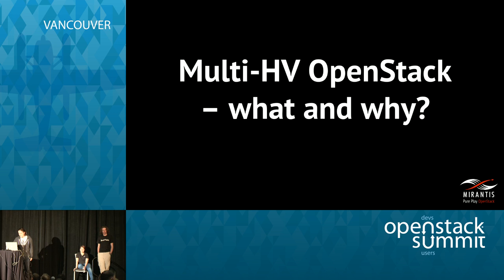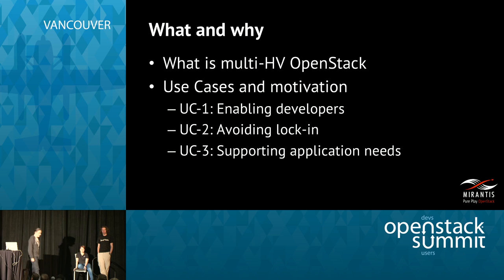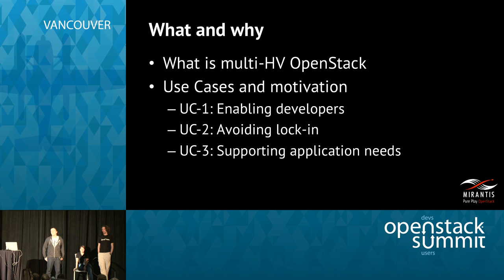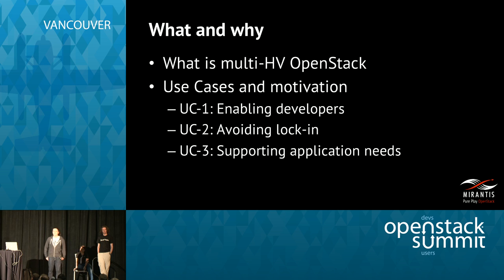So, multi-hypervisor OpenStack — what and why? The idea is pretty obvious to anyone who has been using OpenStack for some time. We have the component called Nova, we have the component called Cinder, we have the component called Neutron, managing compute resources, storage resources, and networking resources. The idea of doing multi-hypervisor OpenStack is to manage more than one type of hypervisor underneath a single Nova installation and provide facilities to tenants to distinguish which hypervisor type they want to schedule the virtual machine to.